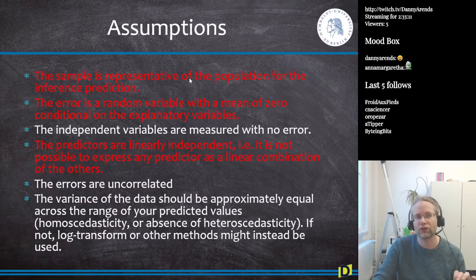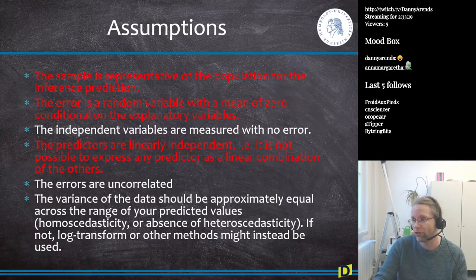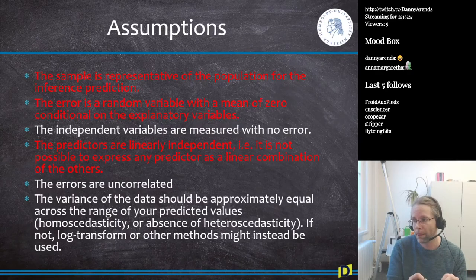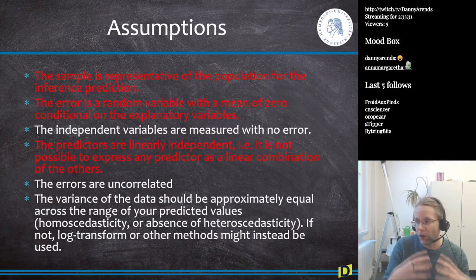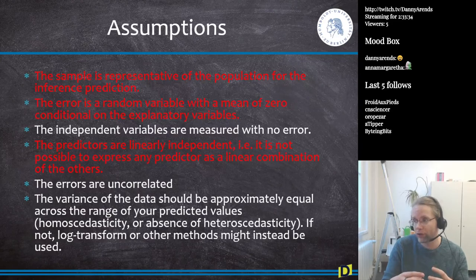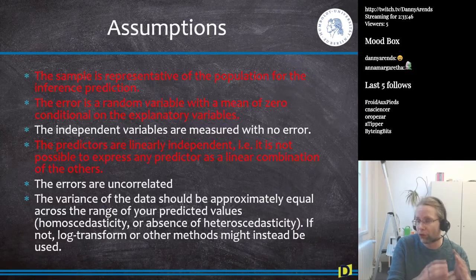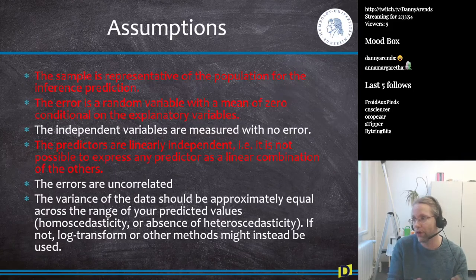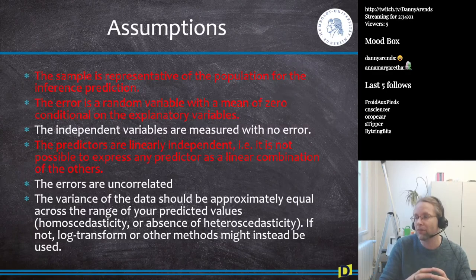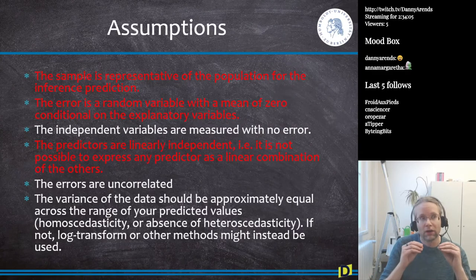Regression comes with a bunch of assumptions, and the ones highlighted in red are the ones most often violated in scientific publications. The first assumption is that the sample is representative of the population for the inferred prediction. If you want to know something about all humans, you cannot limit yourself to studying only people of European descent.